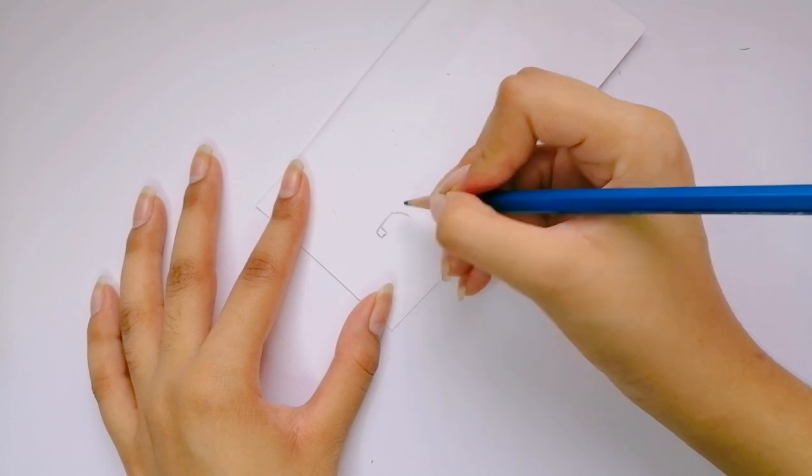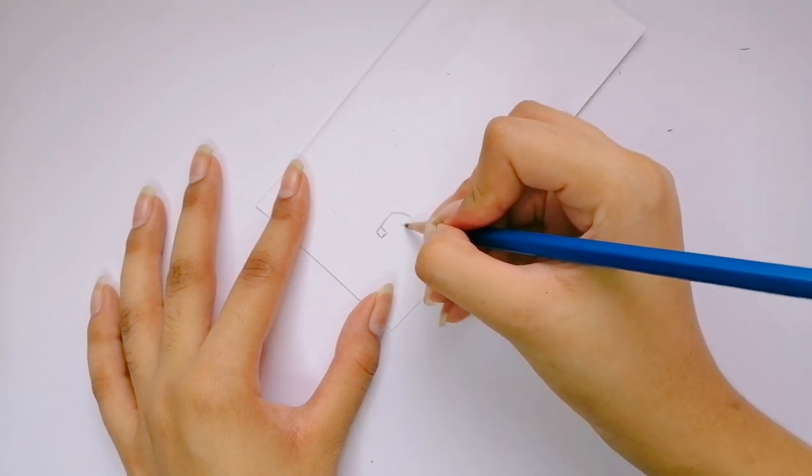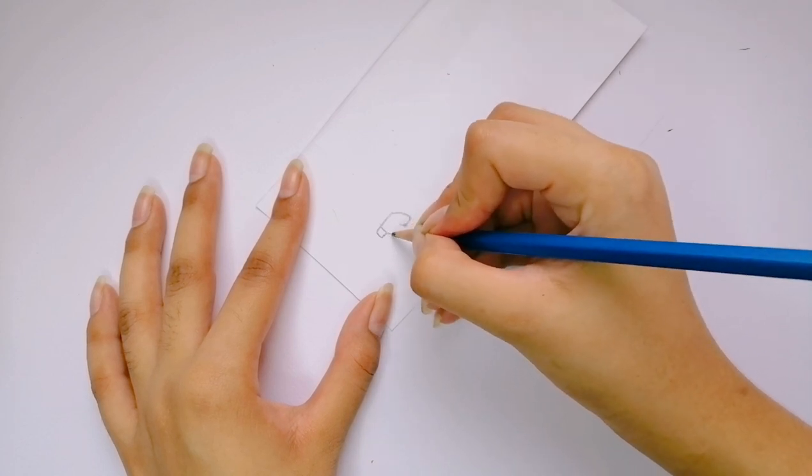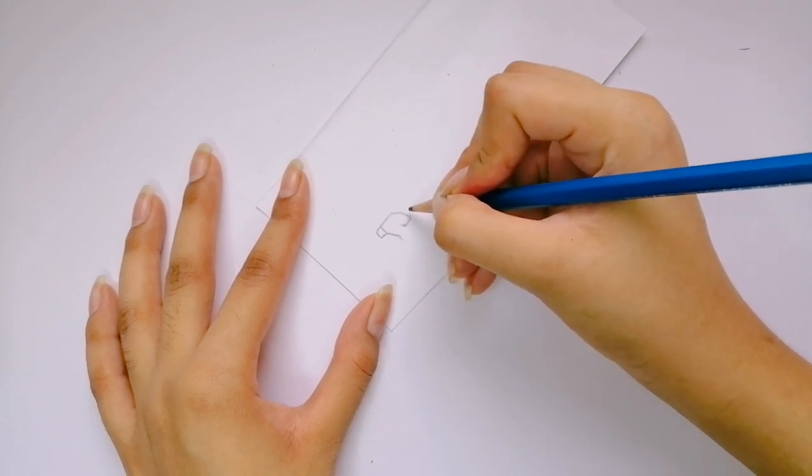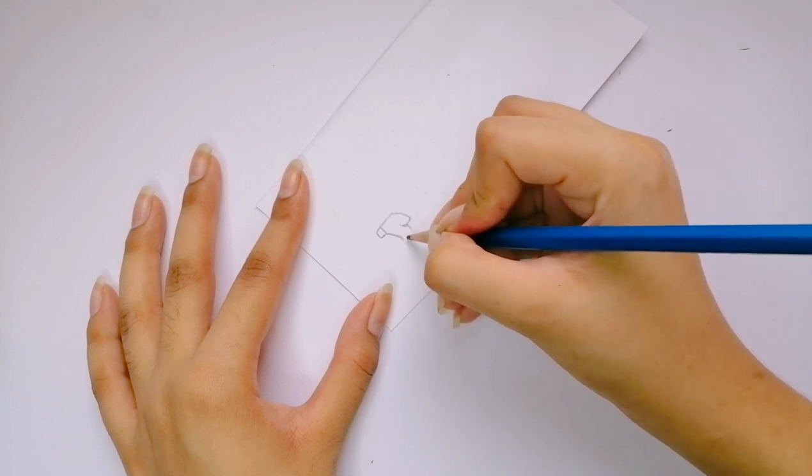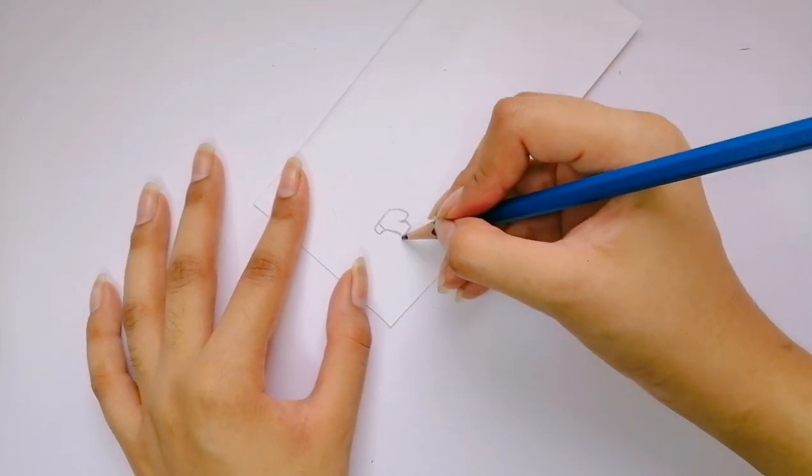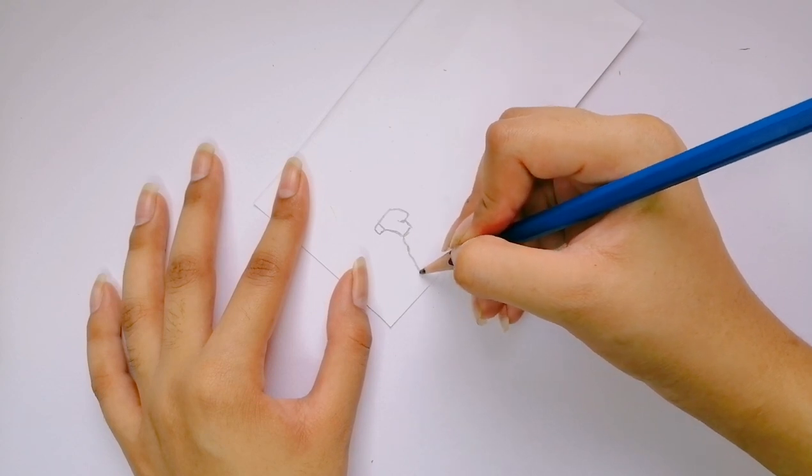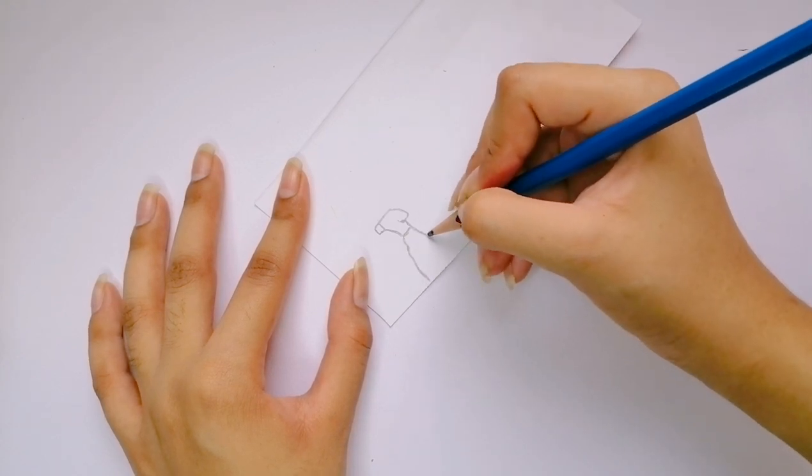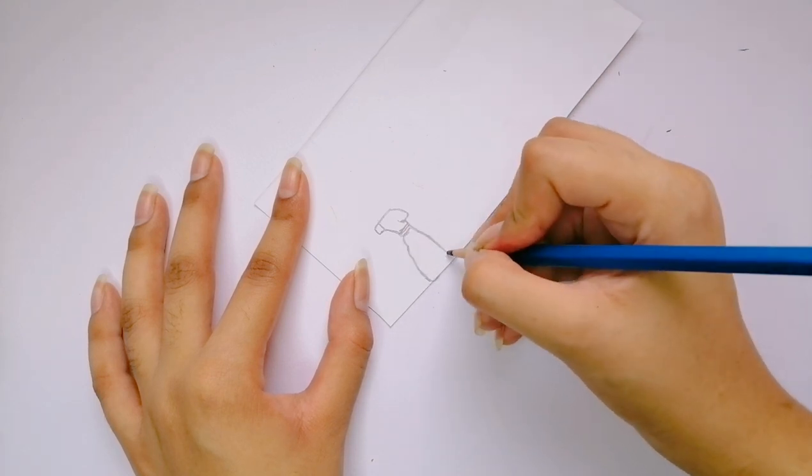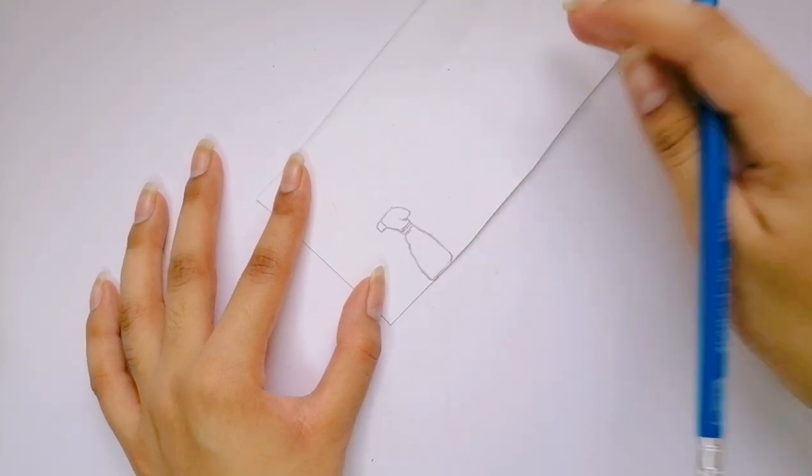If you're not good at drawing, just open the picture of the pin that you want to make on your phone and increase the brightness of your phone, and then trace the pin.